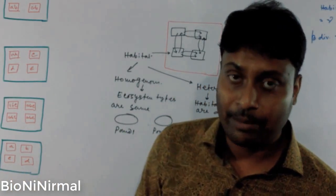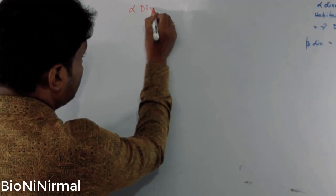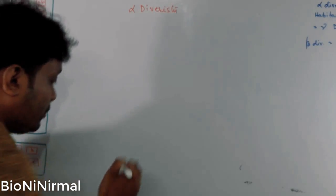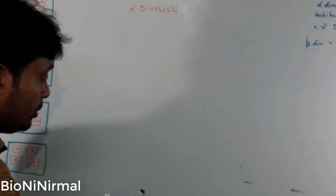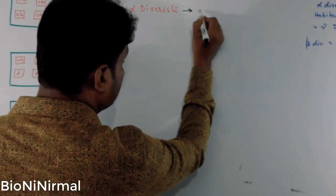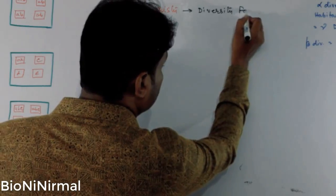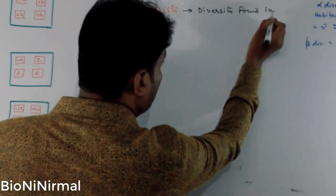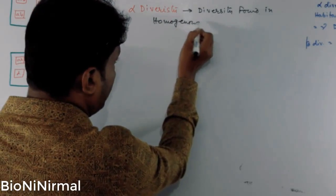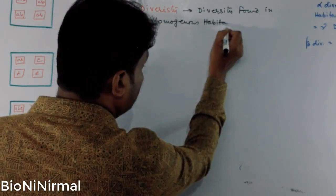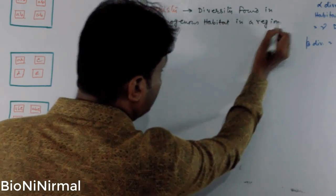Alpha diversity means the diversity found in a homogeneous habitat in a region. This is called alpha diversity.